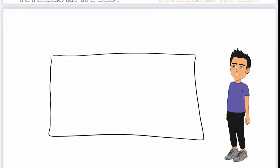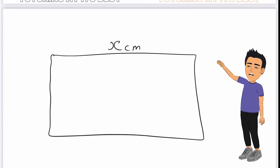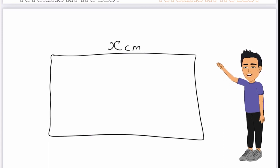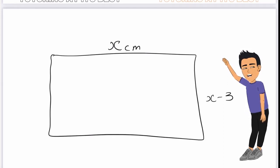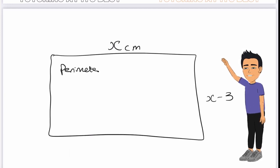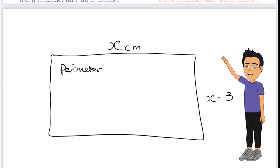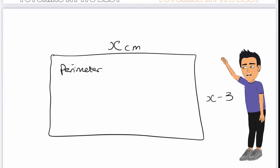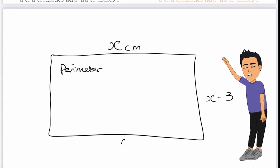The width of the rectangle is x centimeters. The height is 3 centimeters less than the width, which means we'll have x minus 3. We need to write an expression for the perimeter of the rectangle. The perimeter is found by adding together the lengths of the sides of that shape. The width is given as x, and the height is x minus 3 because it is 3 less.